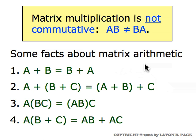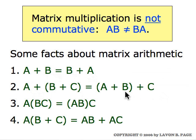Some facts about matrix arithmetic. Property one: matrix addition is commutative — A plus B is the same as B plus A, the order doesn't matter. Property two is called the associative law for matrix addition: adding A to the sum of B and C is the same as adding C to the sum of A and B. Property three is the associative law for matrix multiplication. And property four is called the distributive law: multiplying A times the sum of matrices is the same as multiplying A times each one separately and then adding.